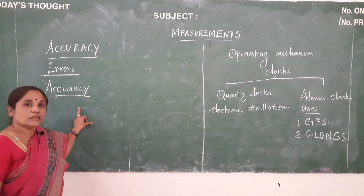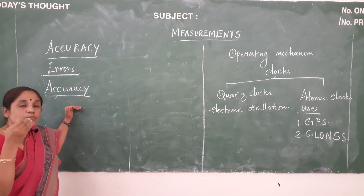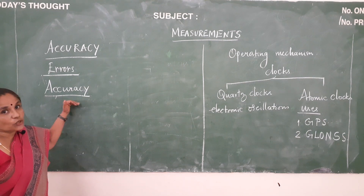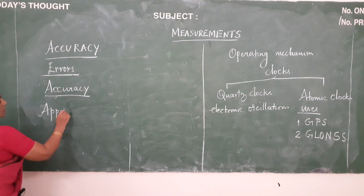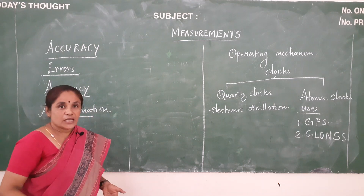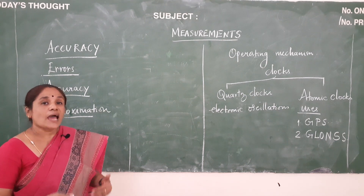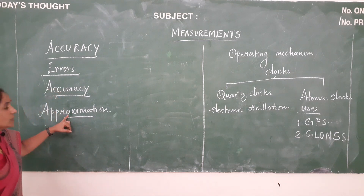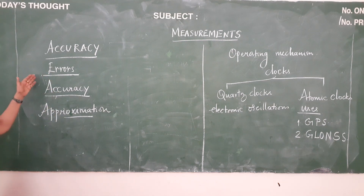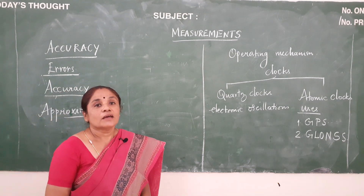After conducting the experiment, you record the value which we call the observed value. If the observed value is very much closer to the real value, your reading is said to be accurate. This we call accuracy. The last term is approximation: if the observed value is acceptably closer to the real value, then you call it approximation. So these are the three terms: errors, accuracy, and approximation. By that we complete the measurements topic. Thank you children.